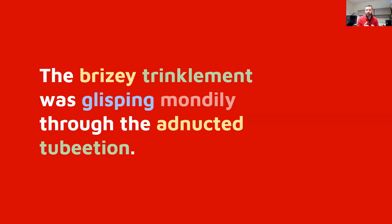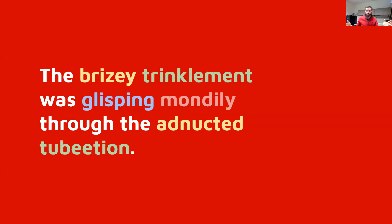These made-up words have the features that would pass our proofs for form words — they've got some of the morphemes you would expect in nouns, verbs, and adverbs. But we don't really know what these mean. However, the sentence still makes sense: if you imagined what the breezy trinklement was, you'd know it was glipsing mondally. If you imagined what that verb means, how would you do it? You do it mondally, and then it goes through the abnuchted tibution. We don't know what these form class words mean, but we understand how they work together to tell the story of the sentence.